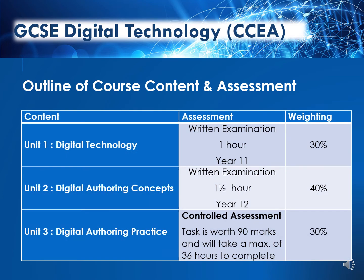The course is comprised of three units. Unit 1, Digital Technology. In this unit, students explore a range of digital technologies available for data storage, manipulation, presentation and so on. Pupils will sit an exam in this unit at the end of Year 11 and it will be worth 30% of the GCSE.